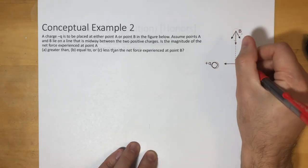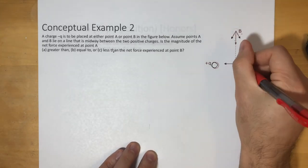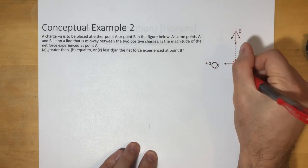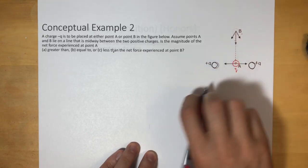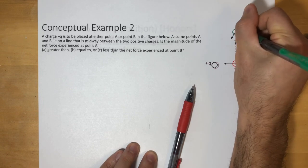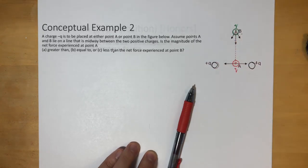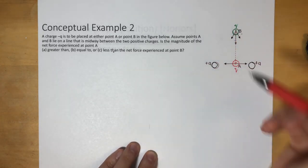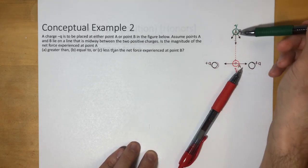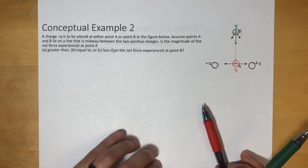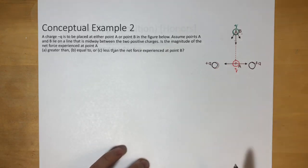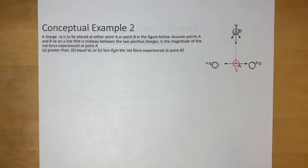Let's say we have a negative charge here at point A — negative Q — and then we have another charge over here at point B, which we'll also call negative Q. We want to know: is the net force more with the red one or more with the green one? It takes a little bit of time to think about that, so if you want to pause, you can.